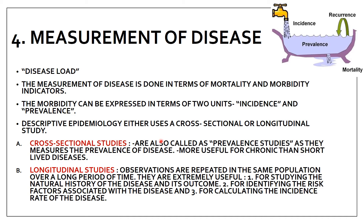Descriptive epidemiology uses either a cross-sectional or a longitudinal study. A cross-sectional study is also called a prevalence study — it covers all current states of a disease, both new and old cases, and is more useful for chronic diseases than short-lived ones. A longitudinal study repeats observations in the same population over a long period of time. Longitudinal studies are useful for studying the natural history of disease, identifying risk factors, and calculating incidence rates.